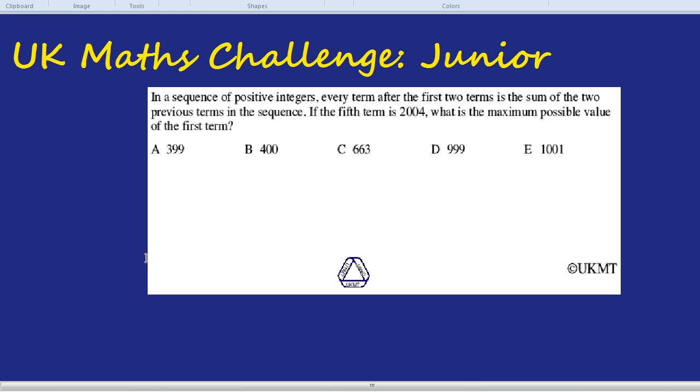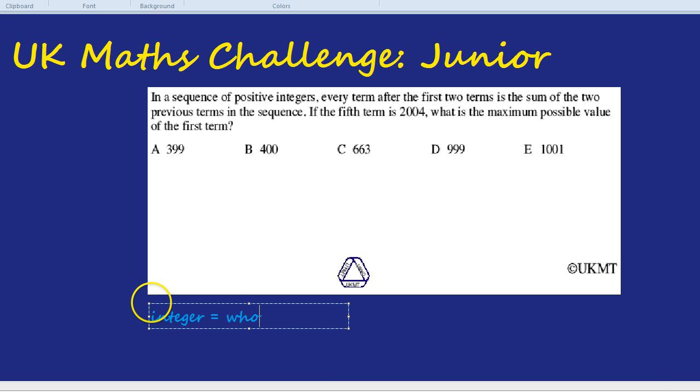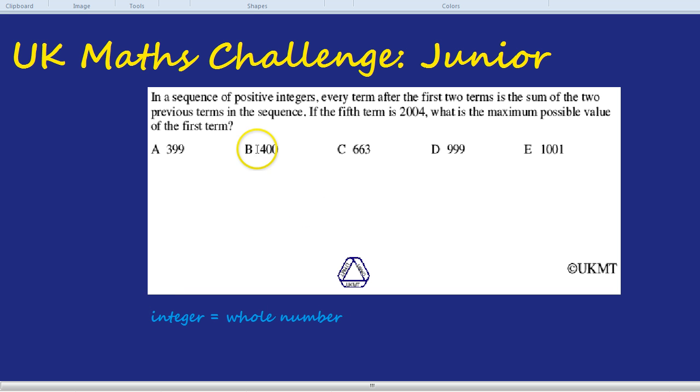Okay, in a sequence of positive integers—integer just means whole number, as in like a 1 or a 2, not a 1.5 or something like that, any decimal—in a sequence of positive integers, every term after the first two terms is the sum of the two previous terms in the sequence.